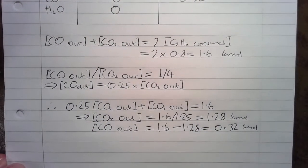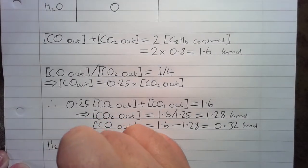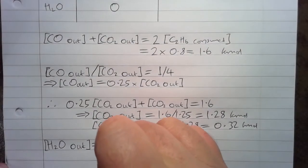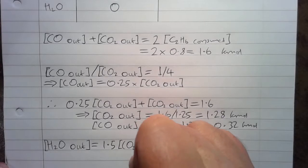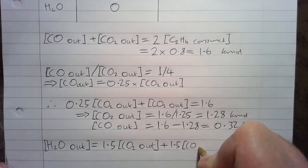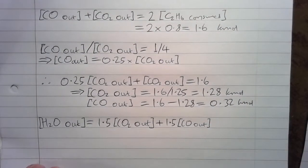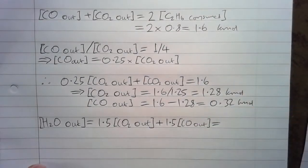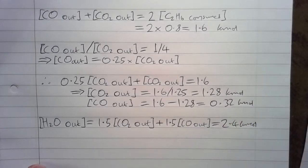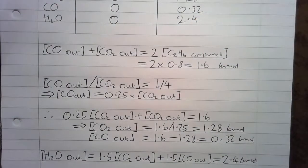So that's starting to fill in the table for us. In terms of the H2O, H2O out, we know from the stoichiometry that that will be 1.5 times the CO2 out plus 1.5 times the CO out. So once we work all of that out, it's going to be 2.4 K moles once we substitute the numbers in. So then we can fill in that we have 2.4 K moles of water coming out.